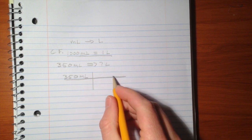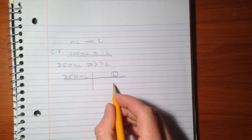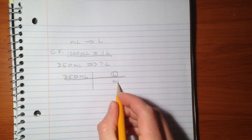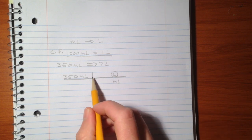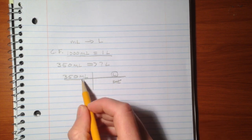We want our units to cancel, so we're left with liters. To do this, we must put milliliters in the denominator. By division, our units will cancel.